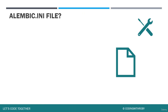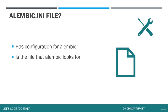The alembic.ini file holds much of the configuration for Alembic. It is also the file that Alembic looks for when being invoked. When we call a revision script to run, Alembic will look at the ini file to find the database connection, username, password, and all of that information. It essentially holds all the properties related to our specific project.